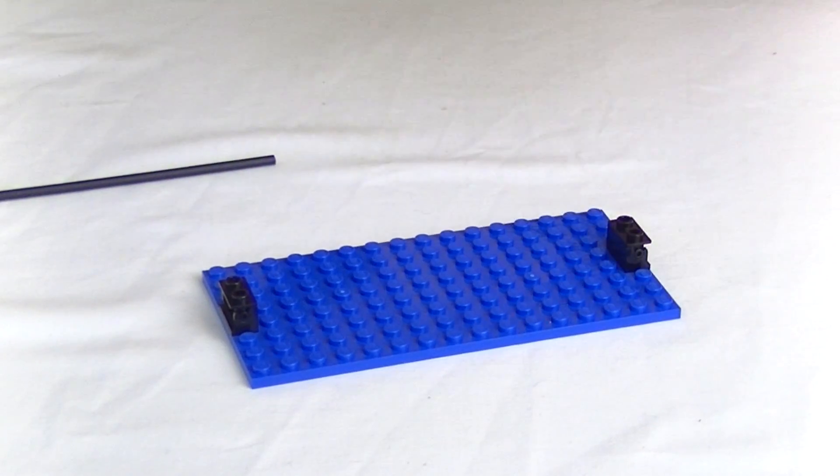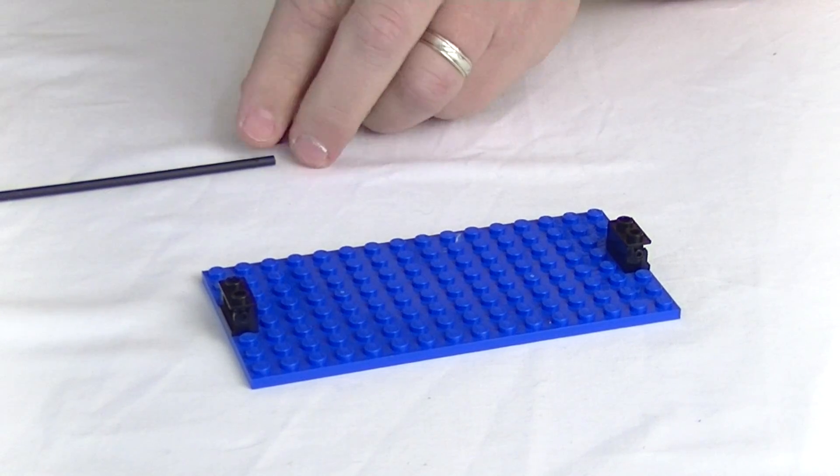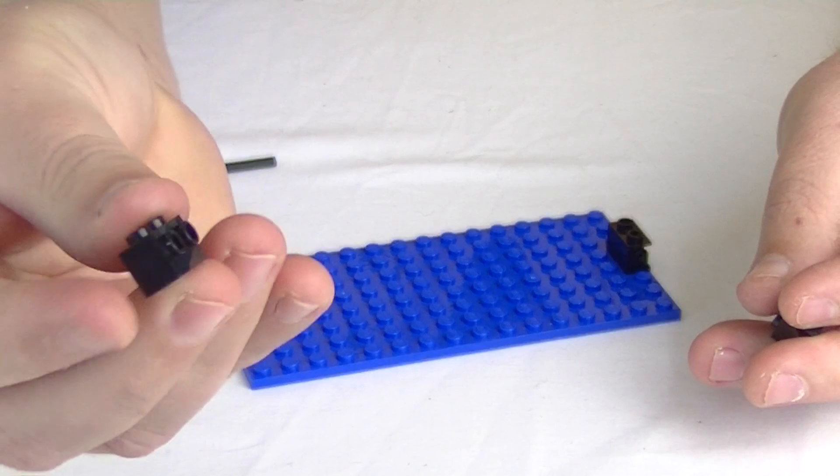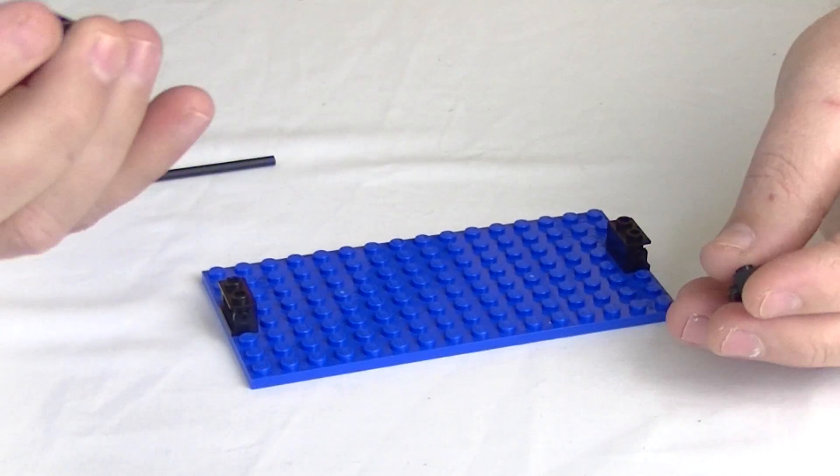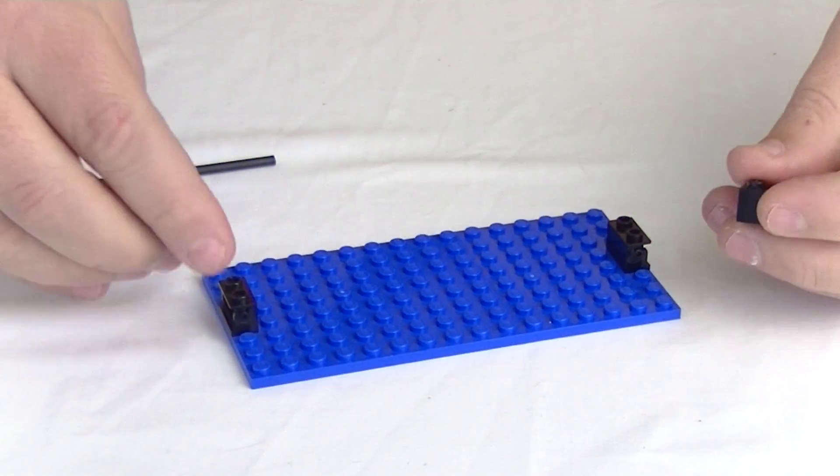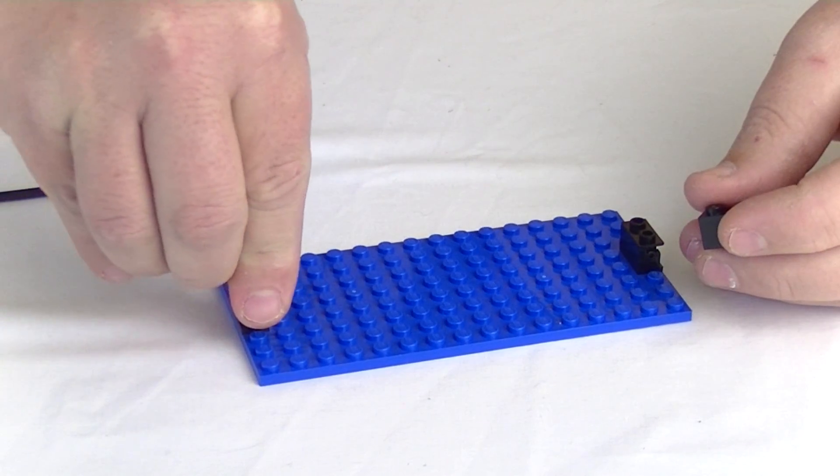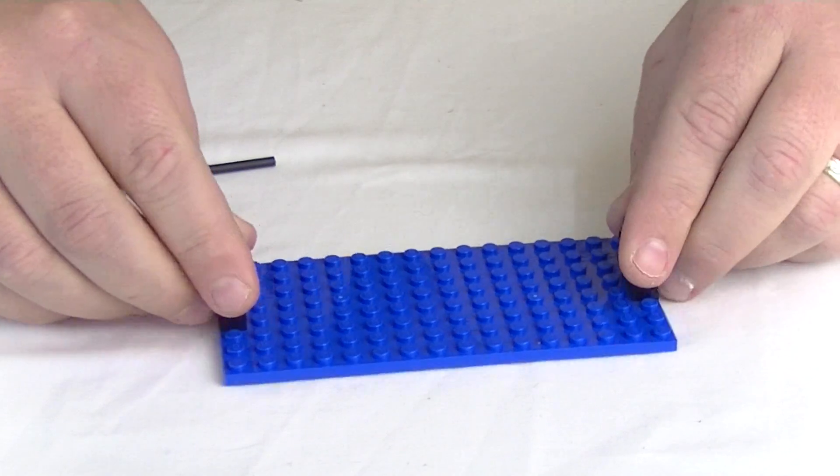And then to hold the hose pieces, I'm using these bricks here with the studs on the side. And of course they are hollow so you can slide your tubing, your rigid hose in there. So I'm going to put that like that.